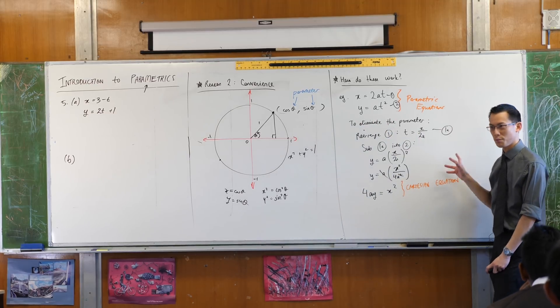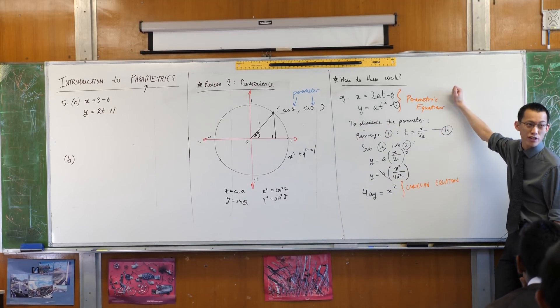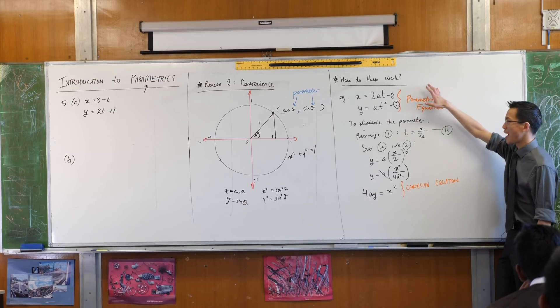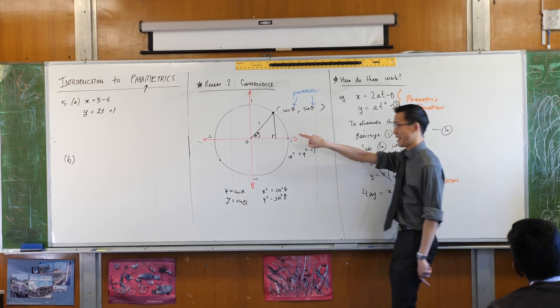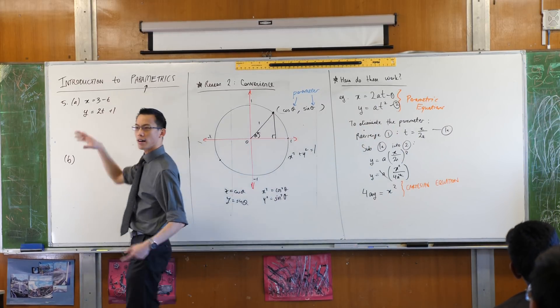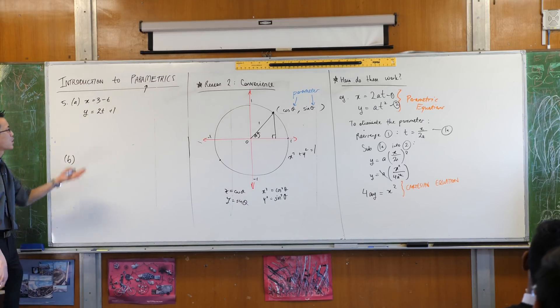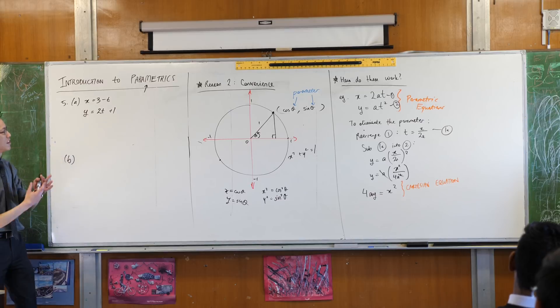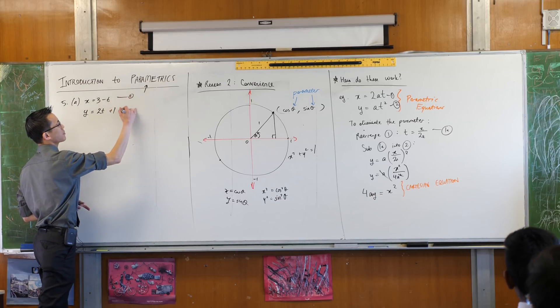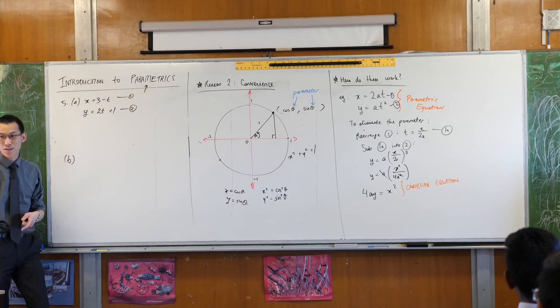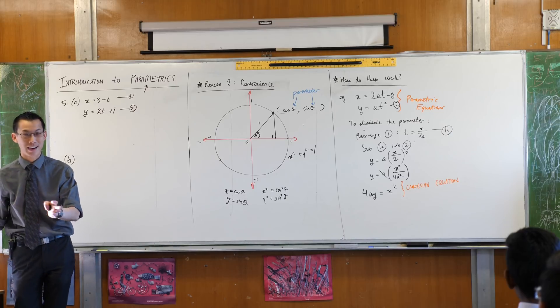I just showed you a few minutes ago how to convert from parametric equations, equations which have parameters in them like these guys, into a Cartesian equation, an equation with no parameters to be seen. So have a look at this. Let's name them, shall we?